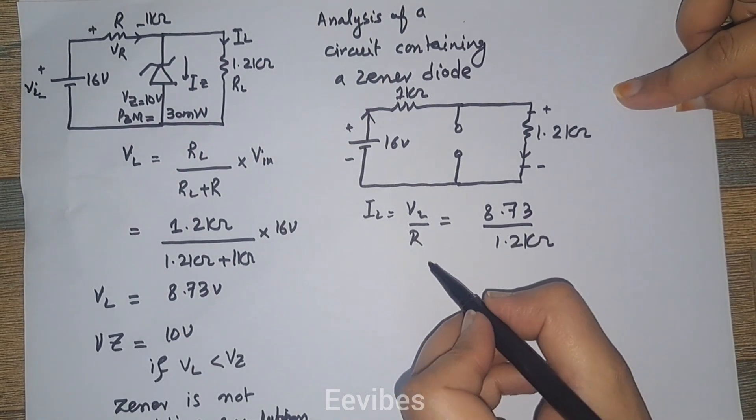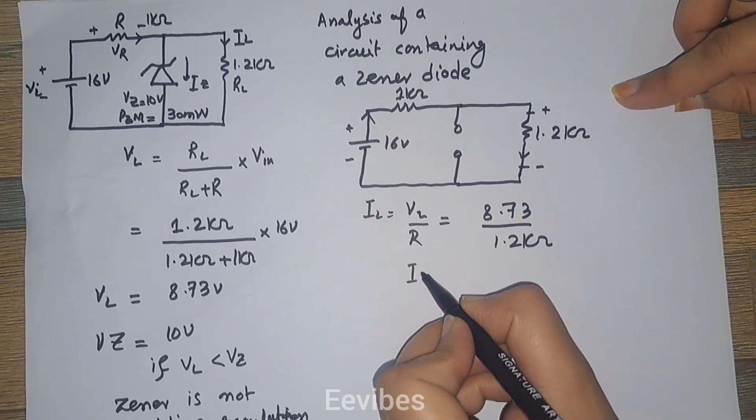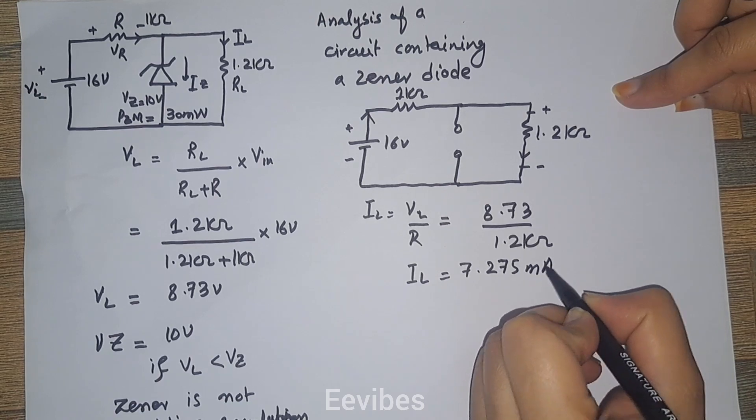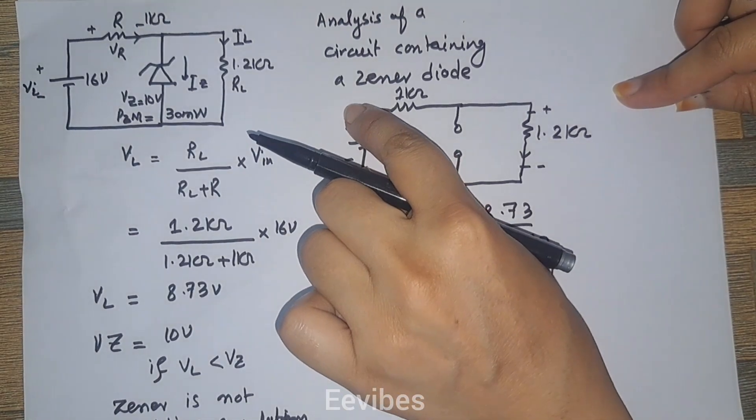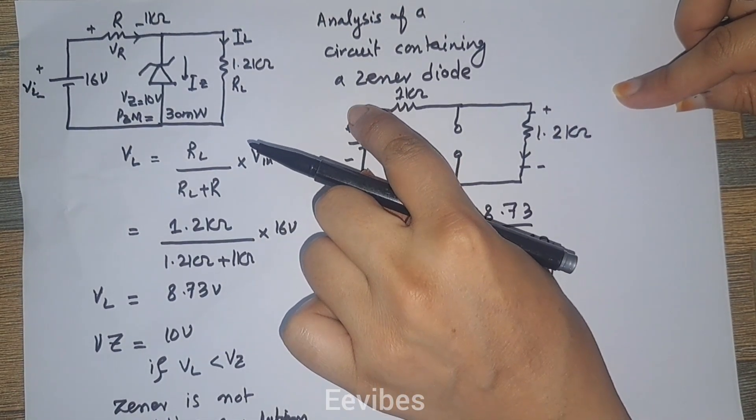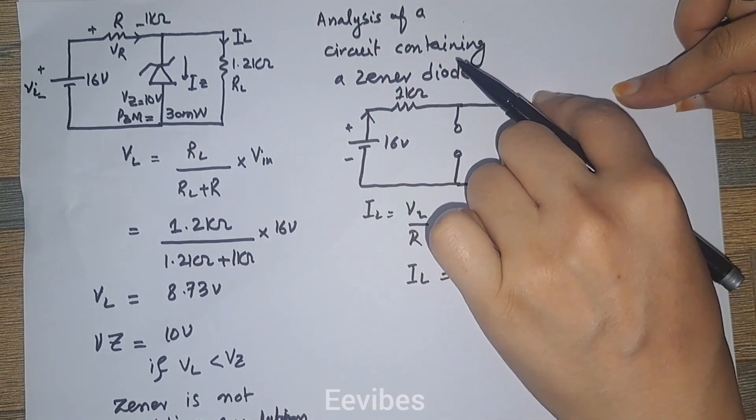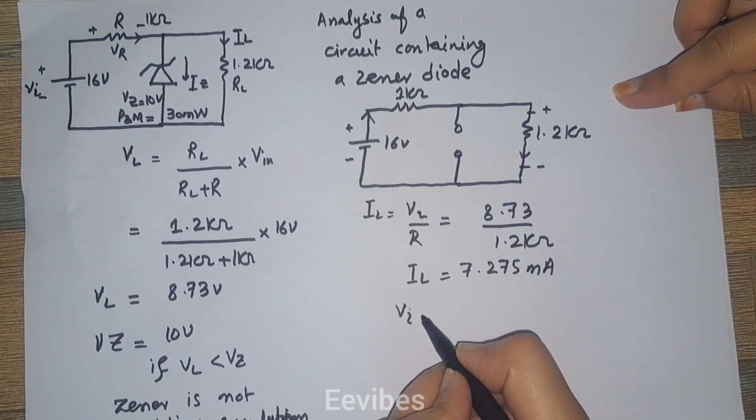This gives 7.275 milliamperes. So the load current equals 7.275 milliamperes. We know that Vin voltages are the voltages distributed across this resistor and this resistor, so Vin should be the summation of VR plus VL.